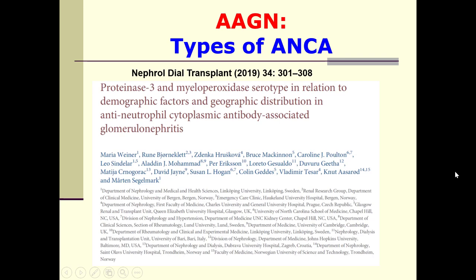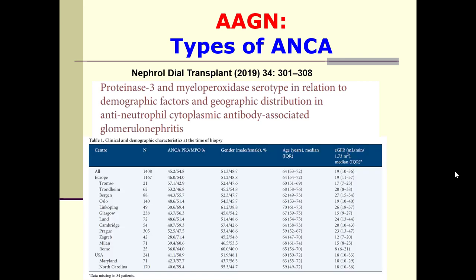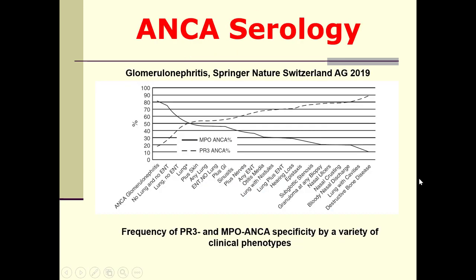The types of ANCA differ according to gender, age, estimated GFR, and geographic location. The frequency of Proteinase-3 and MPO ANCA specificity varies by clinical phenotype. For example, in ANCA glomerulonephritis, the predominant antibody is MPO-ANCA, whereas in lung disease with cavities, Proteinase-3 ANCA is the predominant and leading type.